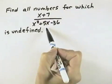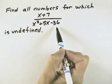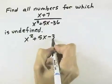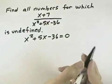and x squared plus 5x minus 36 in the denominator. So what we want to know is when does x squared plus 5x minus 36 equal zero, because that will make the fraction undefined.